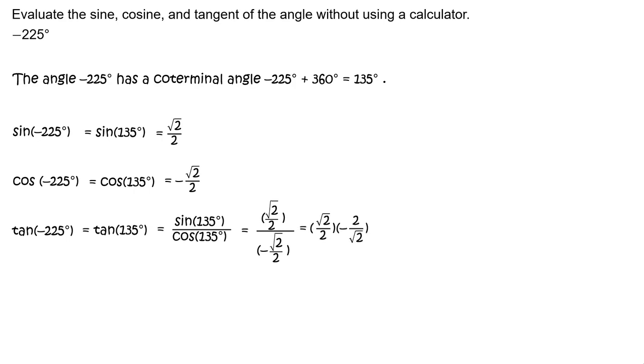Recall that dividing by a fraction is equivalent to multiplying by the reciprocal of that fraction, so rewrite as square root of 2 divided by 2 times negative 2 divided by square root of 2. Multiply and simplify to get negative 1.